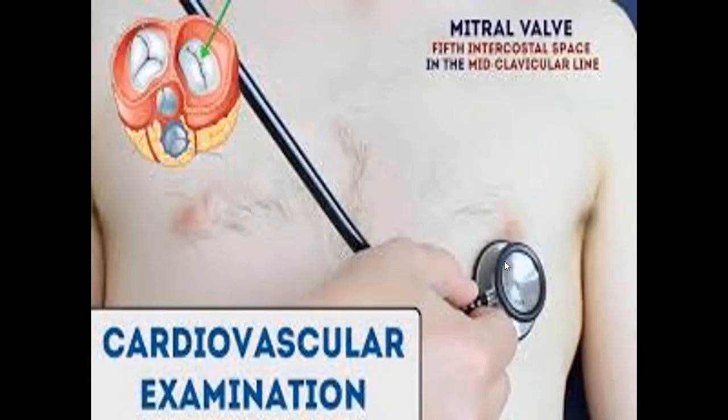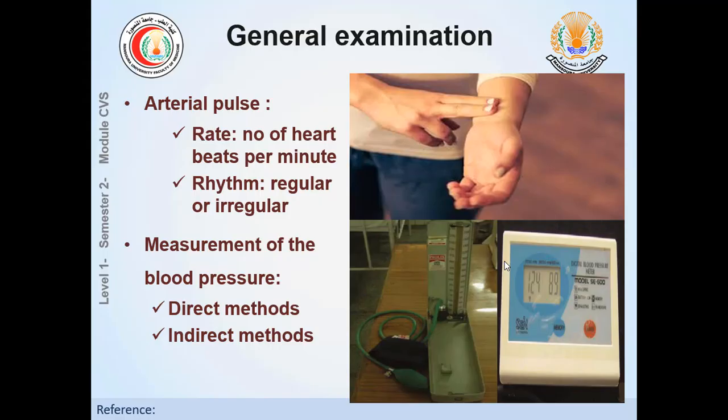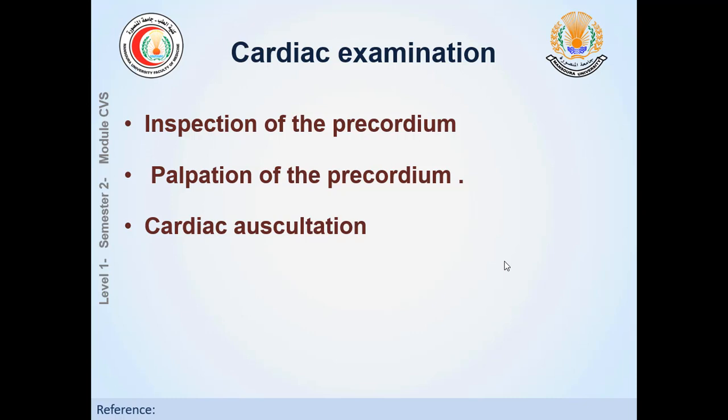After taking history from your patient, you follow a systematic approach and examine the heart. Cardiac examination includes a general examination covering the pulse and blood pressure. For the pulse, you comment on the rate — number of heartbeats per minute — and the rhythm — whether the interval between heartbeats is regular or irregular. You then measure the blood pressure as part of the vital signs, which must be assessed in any patient, not just cardiac patients.